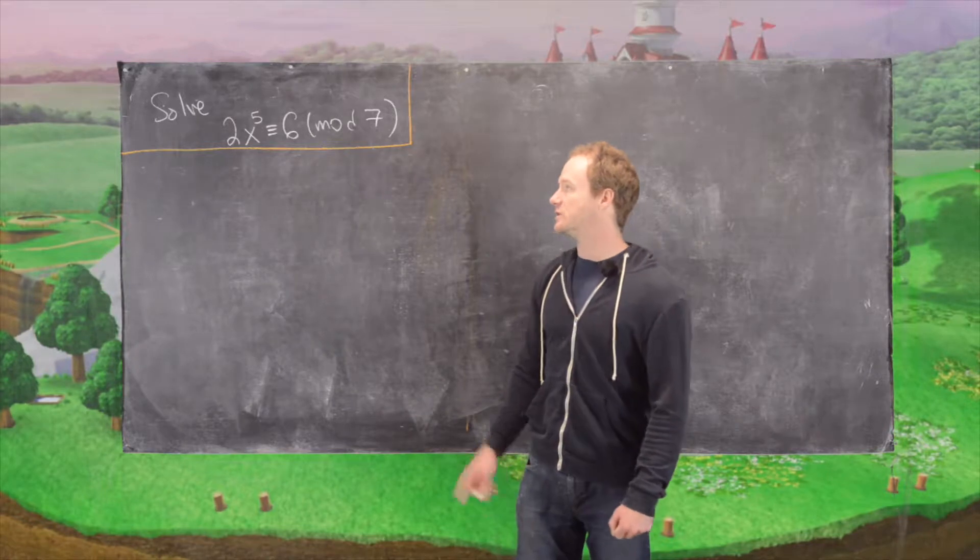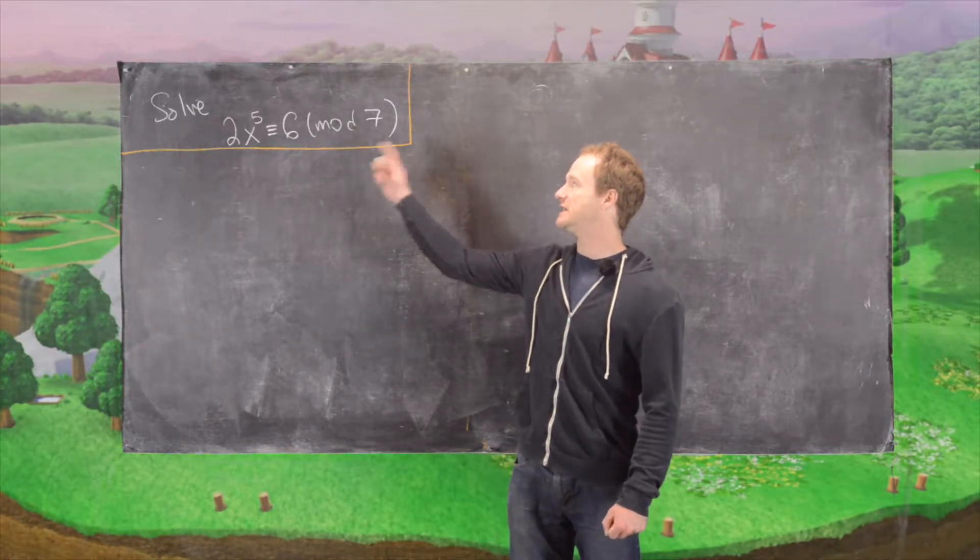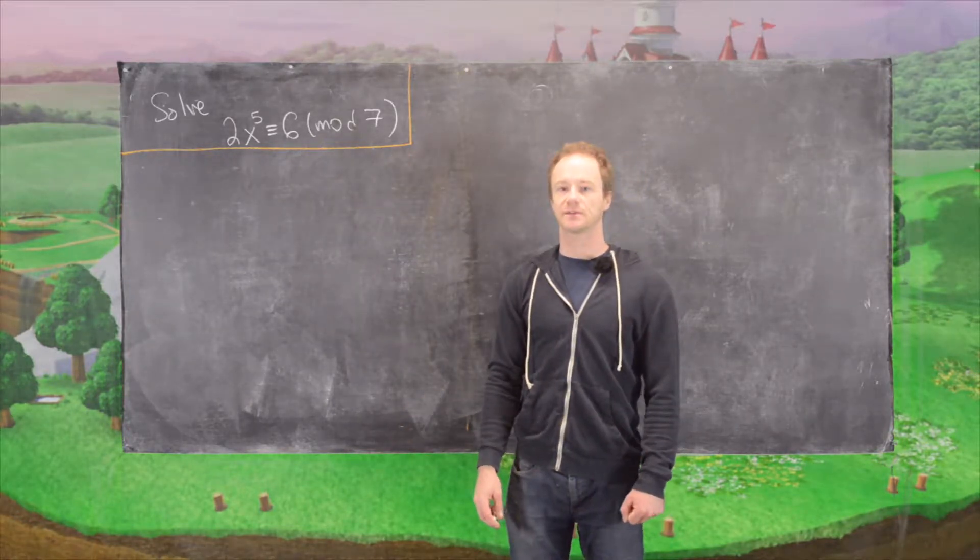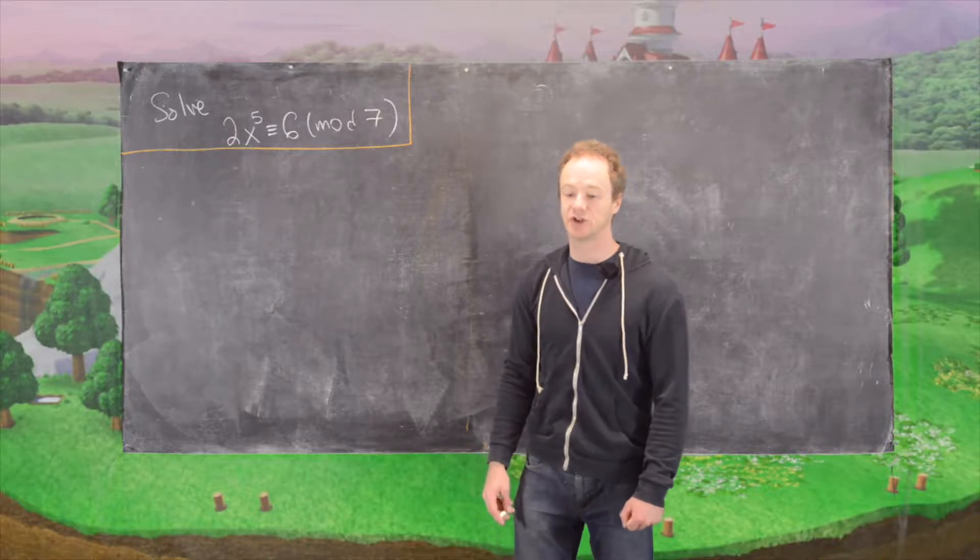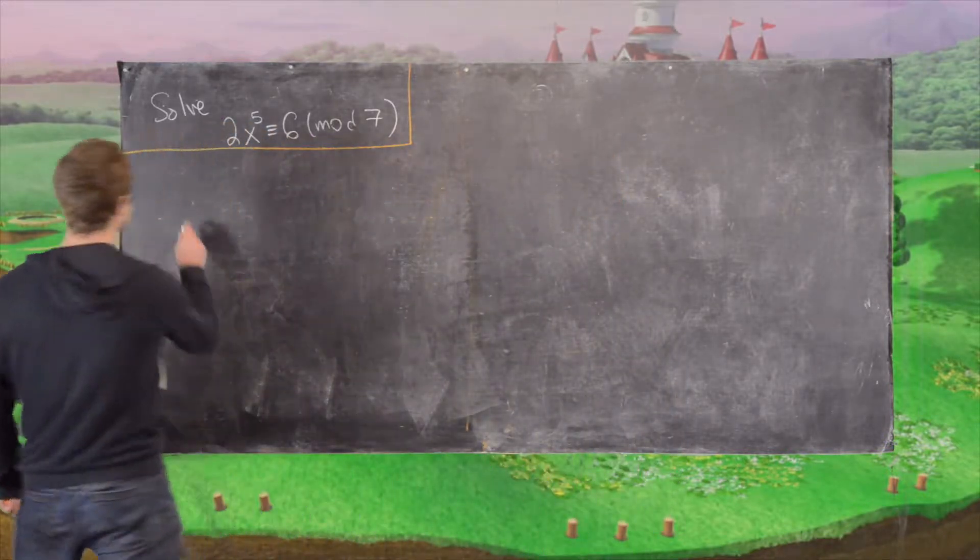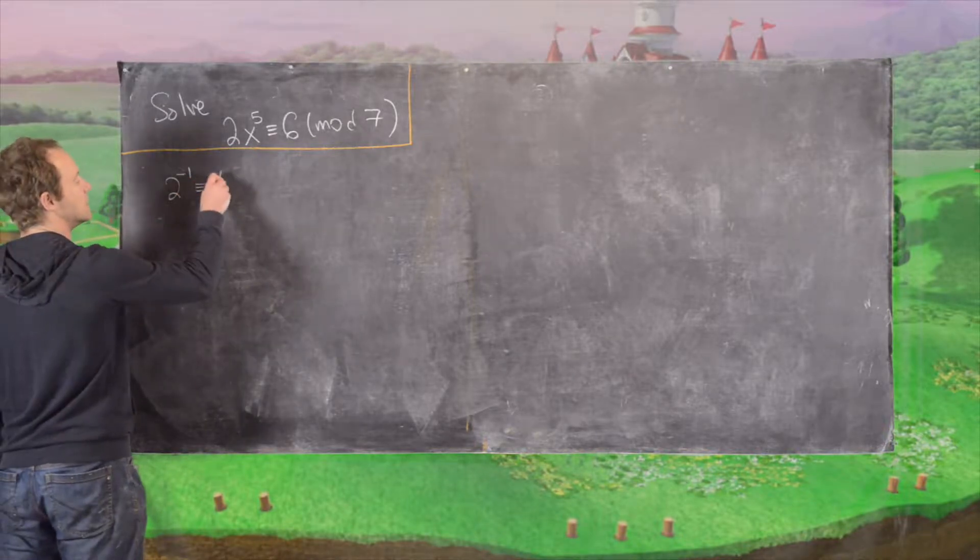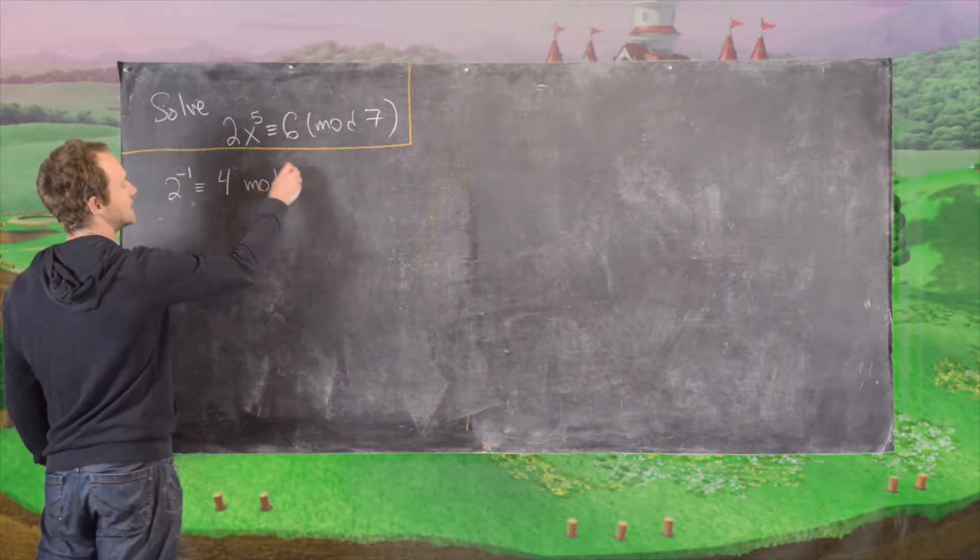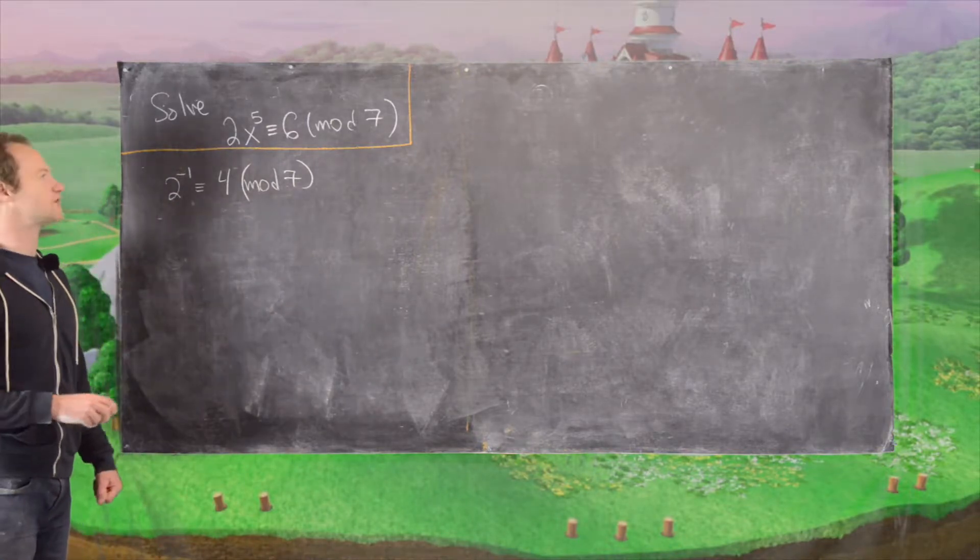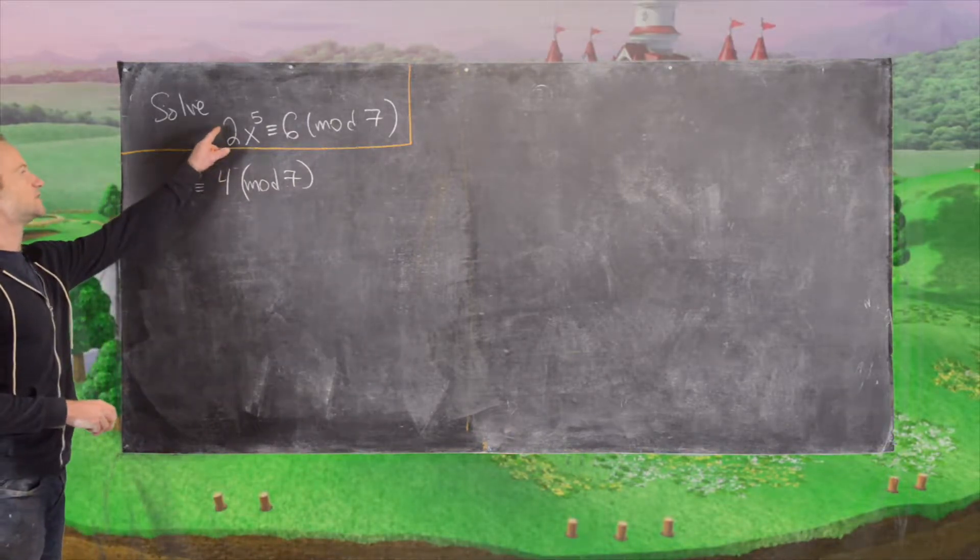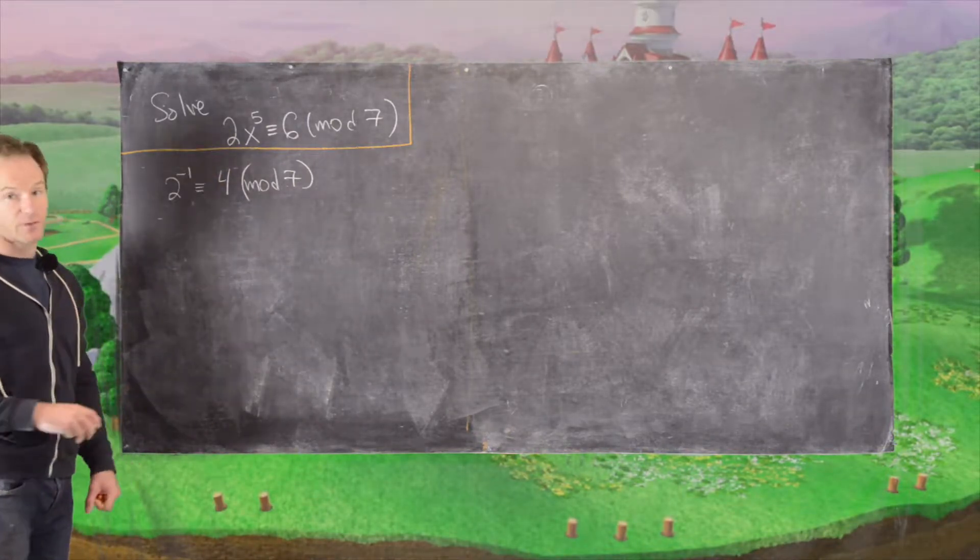The first thing that we want to do is notice that 2 is invertible mod 7. So we can multiply both sides of this congruence by 2 inverse. And in fact, we have 2 inverse is congruent to 4 mod 7. And that's because 2 times 4 is 8, which is 1 mod 7. So that's what we'll do. We'll multiply both sides of this by 4.